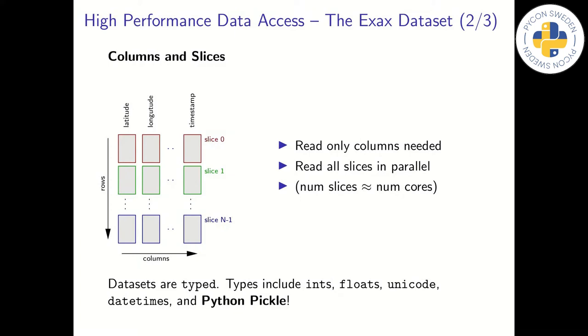In the picture is a schematic view of a dataset on disk, where each rectangle corresponds to one file. There is one file per column and per slice. The main idea is that we can read all slices in parallel, and we only read files corresponding to those columns needed for the task at hand. Together with file compression, this minimizes the I/O bandwidth bottleneck to and from disk.